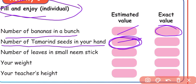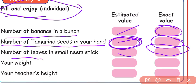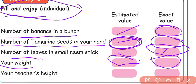Count the tamarind seeds in your hand and write the exact value. Write the number of leaves in small neem sticks — first estimate, then count the leaves and write the number. Also guess your weight and write the correct weight. Finally, estimate your teacher's height.